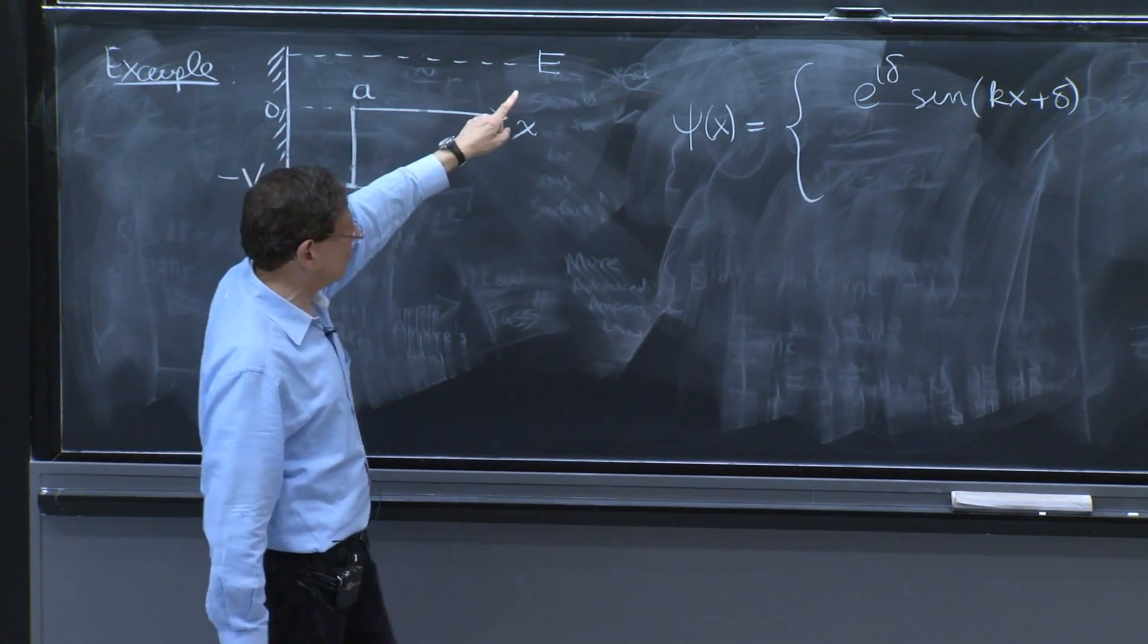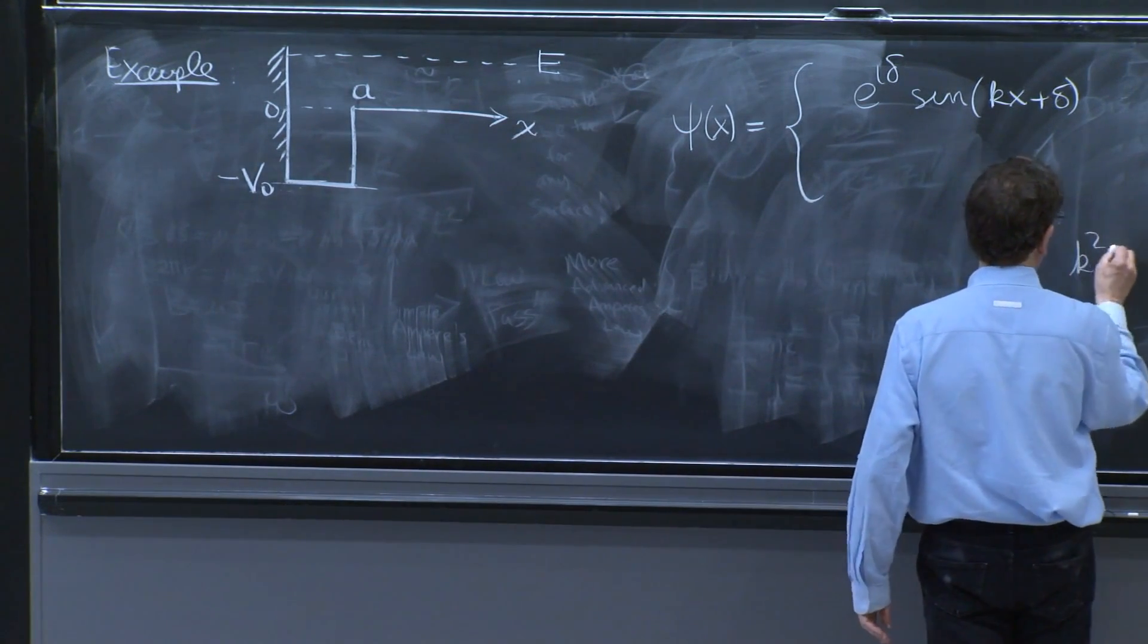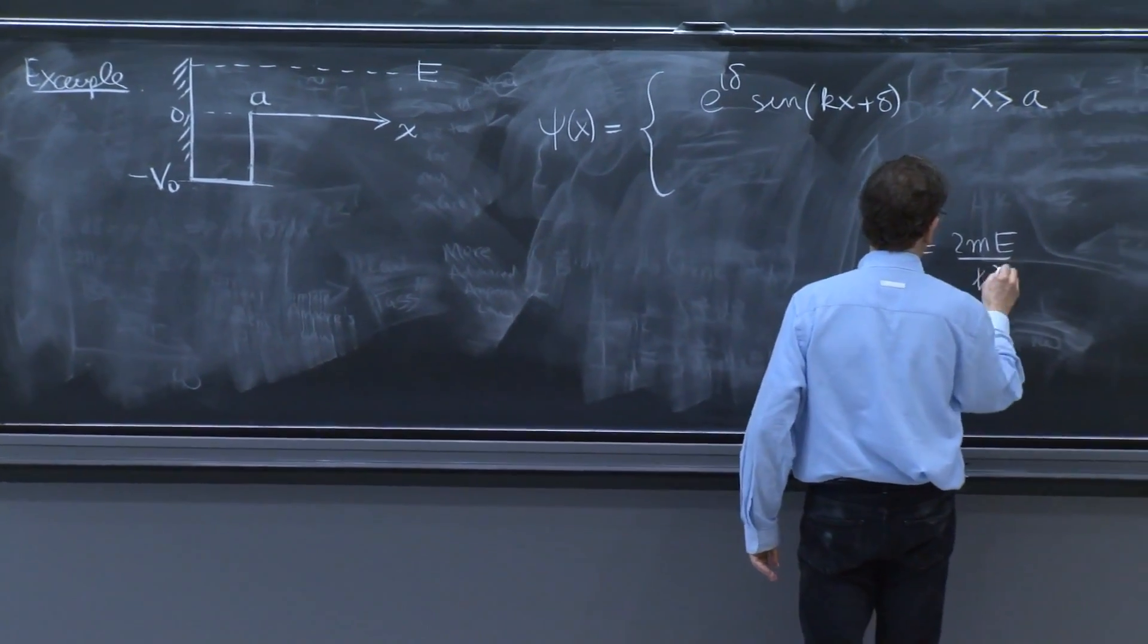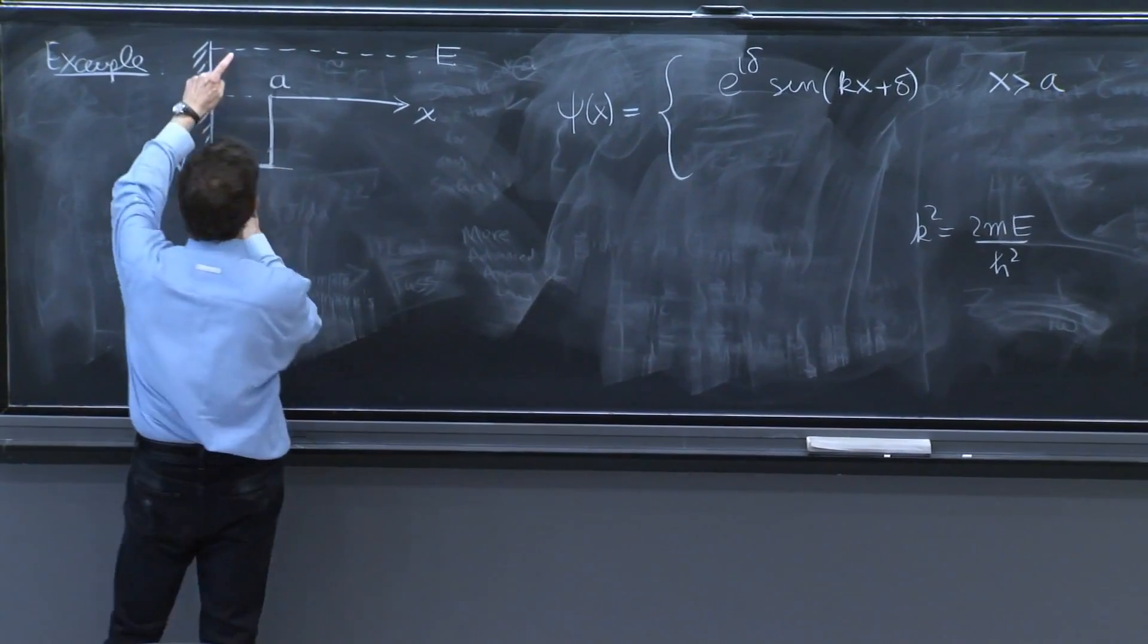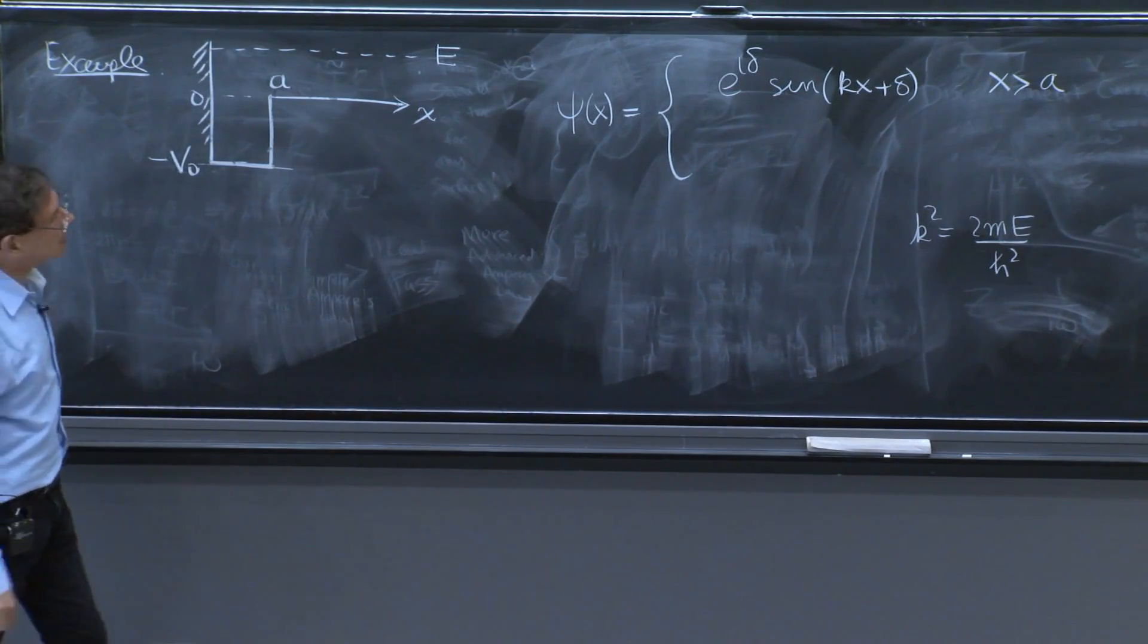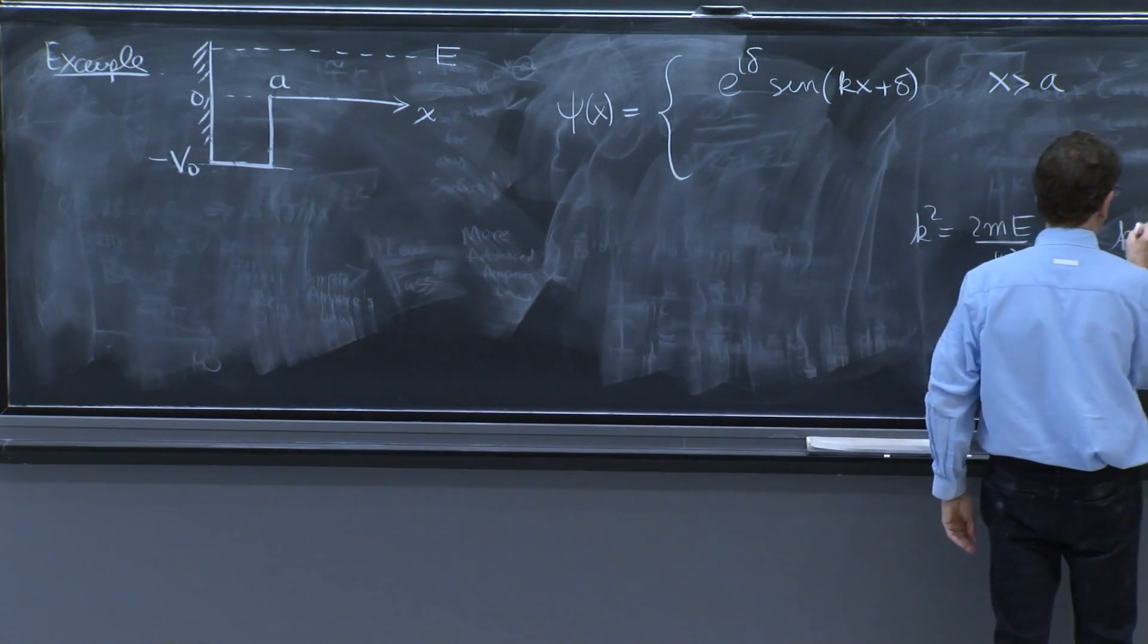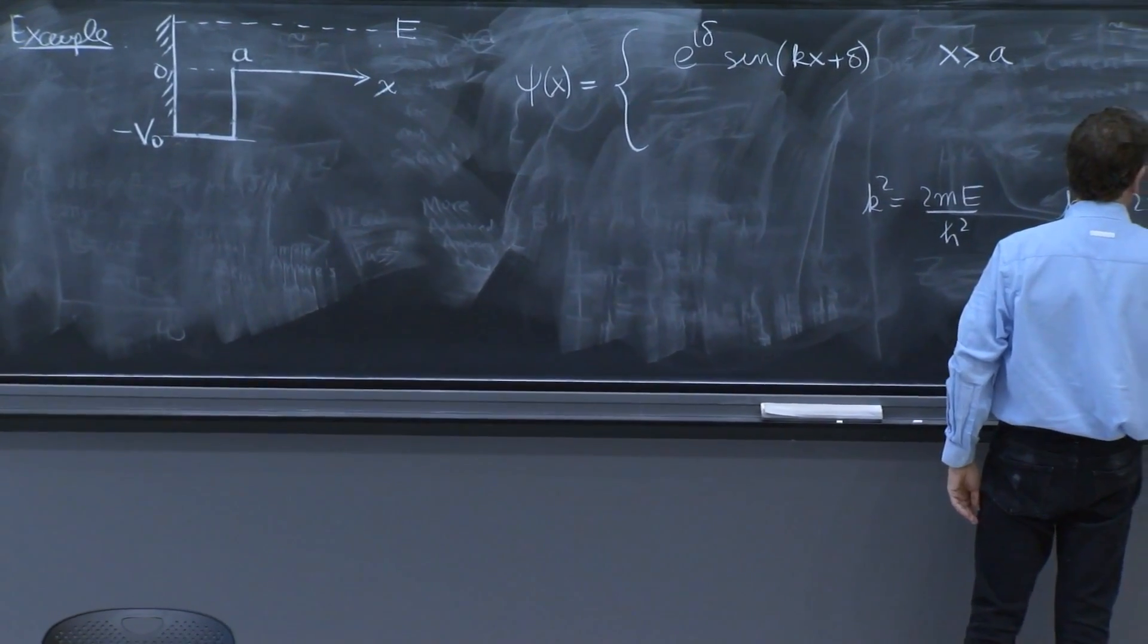k is always related to e by the standard quantity, k squared equal 2m e over h squared, or e equals the famous formula. On the other hand, there is a different k here because you have different kinetic energy. There must be a k prime here, which is 2m e plus v0. That's a total kinetic energy over h squared.